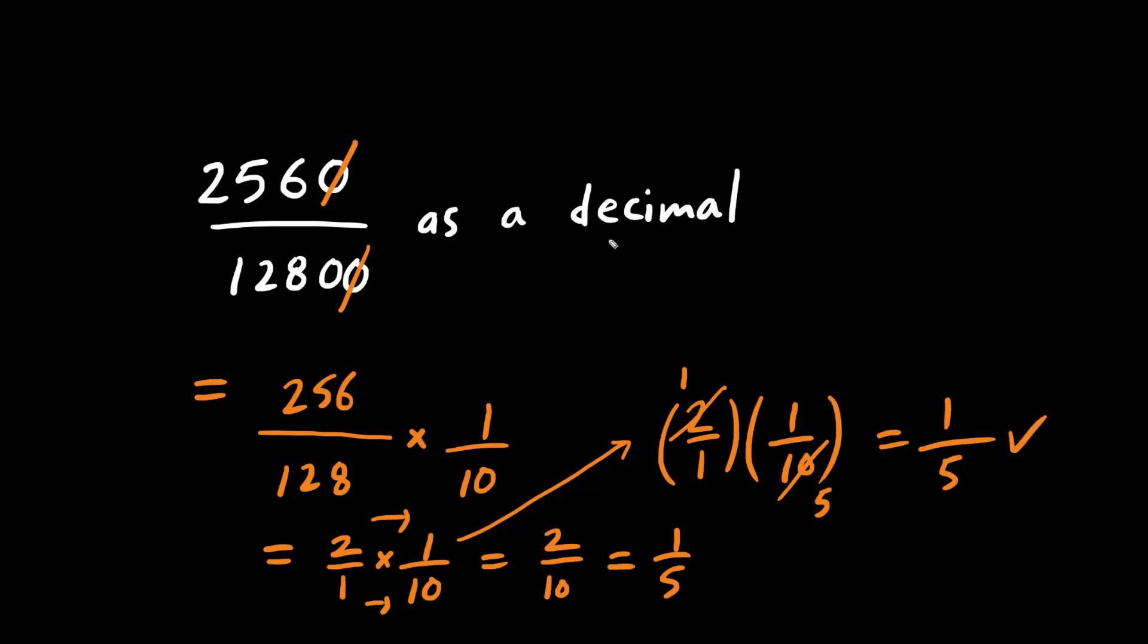But we're not done yet. We need a decimal number. What is 1 divided by 5? Do not mix these up. 5 fits into 1 zero times. So 5 times 0 is 0. We can subtract and drop the next digit, which is a 0. Now this is the end of the number, so we put a decimal place right in the corner here. 5 times what is 10? 5 times 2 is 10. And we subtract and there's no remainder. So this here is our final decimal answer. Thank you.